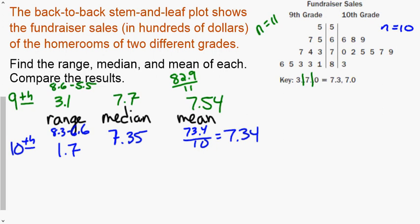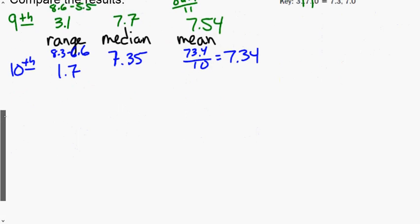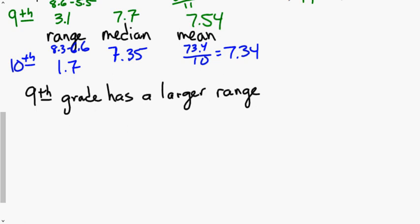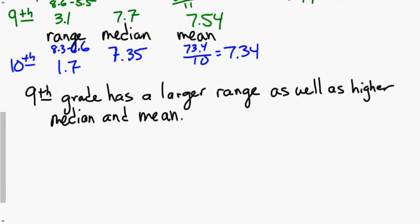Compare the results. Well, what do we notice? Ninth grade has a larger range. They also have a higher median and a higher mean as well. Writing that statement, what do we notice from the data?